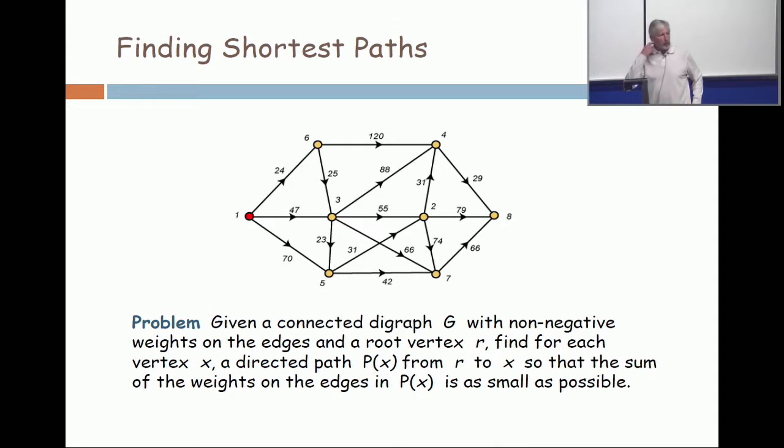Now, we could say, I just want to know the shortest path from vertex 1 to vertex 7. Don't give me all that other stuff. But it will turn out that finding one is computationally equivalent to finding them all. And for that reason, I've stated it that way.